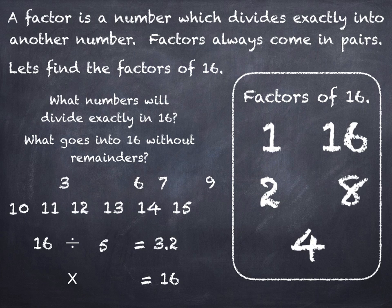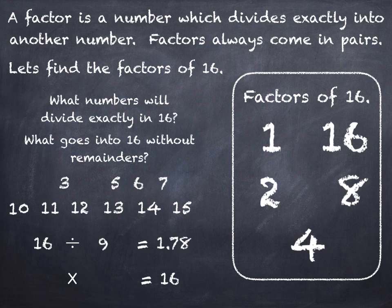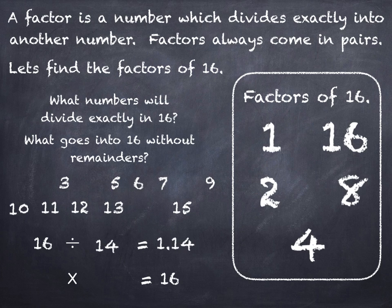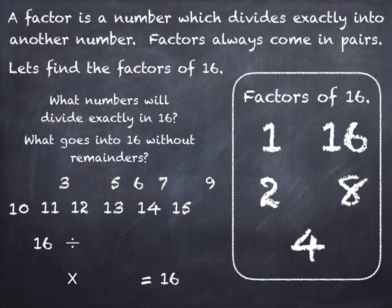Now all the other numbers, we're going to run through them really quickly because none of the other numbers will divide exactly into 16. There are no more factors of 16. So the factors of 16, the numbers that will divide exactly into 16 without remainders, are 1 and 16, 2 and 8, and 4.